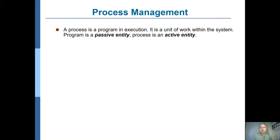A process is actually a program in execution. On your disk you have some files — data files like a .doc or .docx file, or programs like Word executable, Excel, PowerPoint, or programs you write in Eclipse. These are programs, for example written in C, Java, or Python. But when it's residing on your disk it's a program; when you run that program, a process is created out of it.